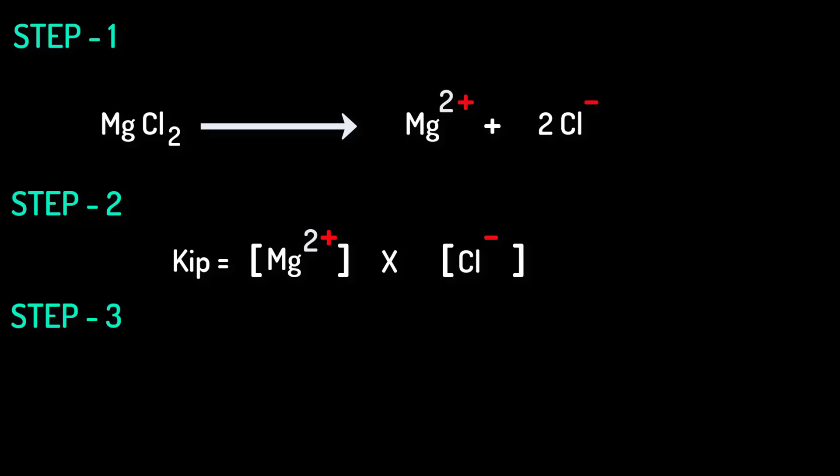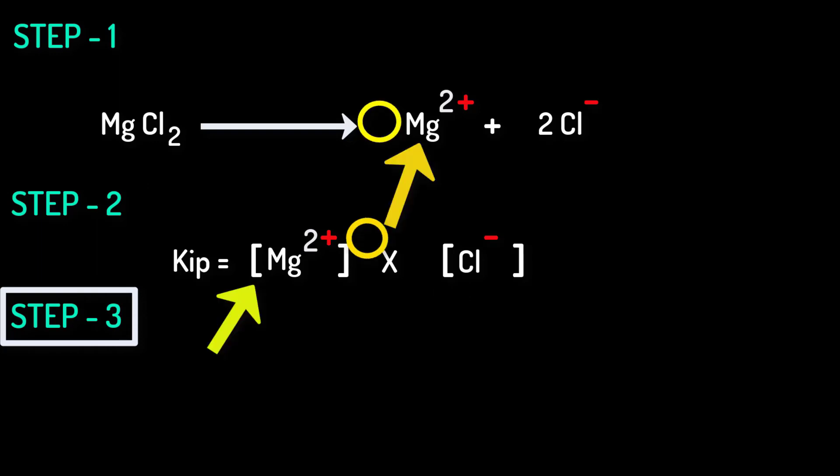Step 3. In this step we will write the coefficient of this cation as its power and we will write the coefficient of this anion as its power. Now the question is what is a coefficient? In chemistry the number in front of a formula or ion is called a coefficient.